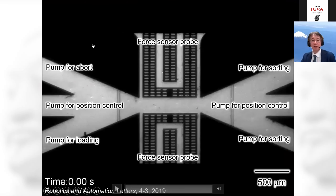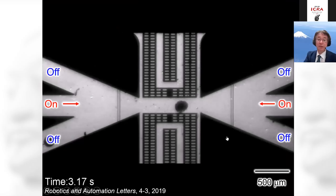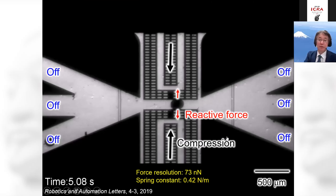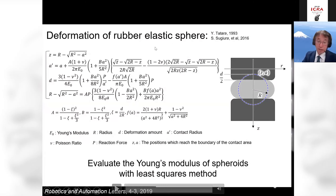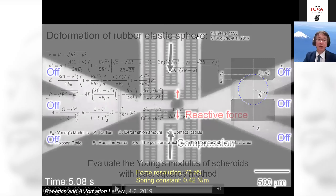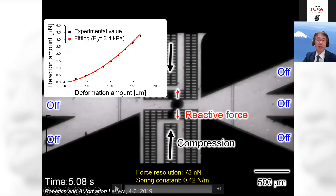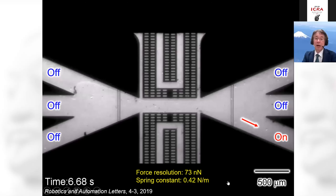This is an integration of the measurement system and sorting system. First the target is loaded and positioned between two probes, then pinched to measure the force. We use the rubber elastic sphere deformation model to evaluate the mechanical property of the target. From the force curve between deformation amount and reaction amount, we can calculate the Young's modulus of the object by fitting. After measurement, we can sort it by controlling the pressure inside the microfluidic chip.